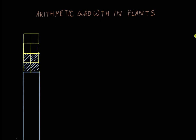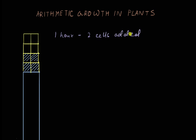So how do we quantify all this? Let's try to find a formula for this phenomenon. Let's say each division happens every hour, so in one hour, two cells are added. How many cells will be added after three hours? Naturally, two times three, which is equal to six.